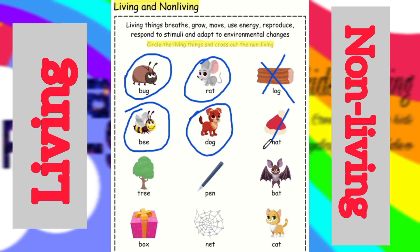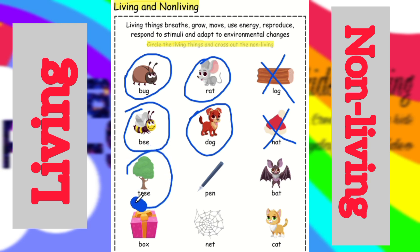Head cannot move by itself, so it is a non-living thing. Tree can breathe and grow, so it is a living thing. Circle the tree like this.